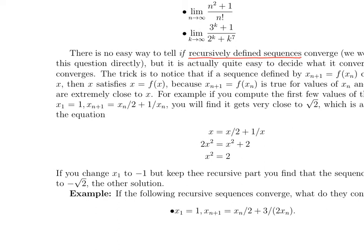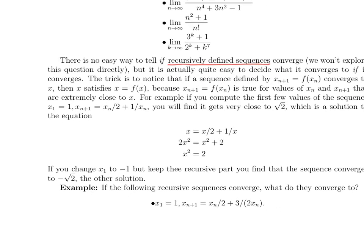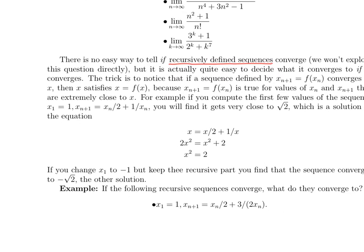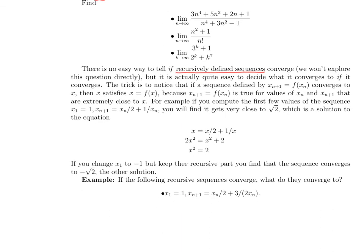So the first example of this is recursively defined function sequences. It's generally really hard to tell if those converge. We won't generally answer that question. We'll learn some techniques that actually could be applied, but we won't address that question. But what you can tell with a recursive sequence is if it converges, here's what it has to converge to. How do you do that?